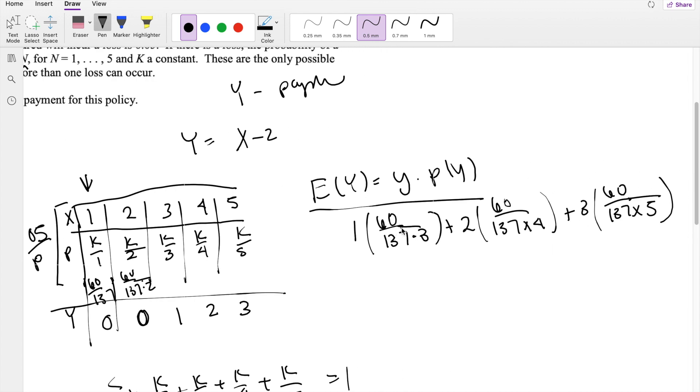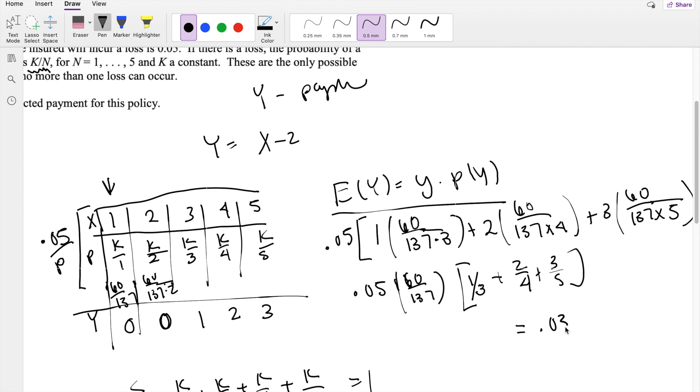This is only an expectation if an accident happens. Before we plug it into the calculator, we can simplify by factoring out 60 over 137. Less to tap in means less mistakes and it's quicker. So this is 1/3 plus 2/4 plus 3/5, which equals 0.03138.